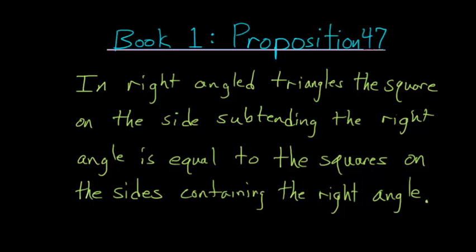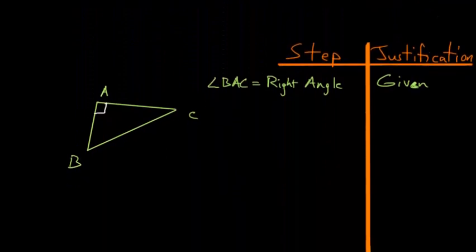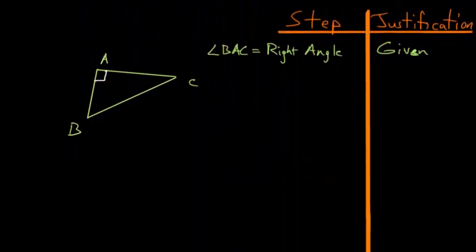For Book 1, Proposition number 47 of Euclid's Elements: in right-angled triangles, the square on the side subtending the right angle is equal to the squares on the sides containing the right angle. This proposition is essentially the Pythagorean theorem.